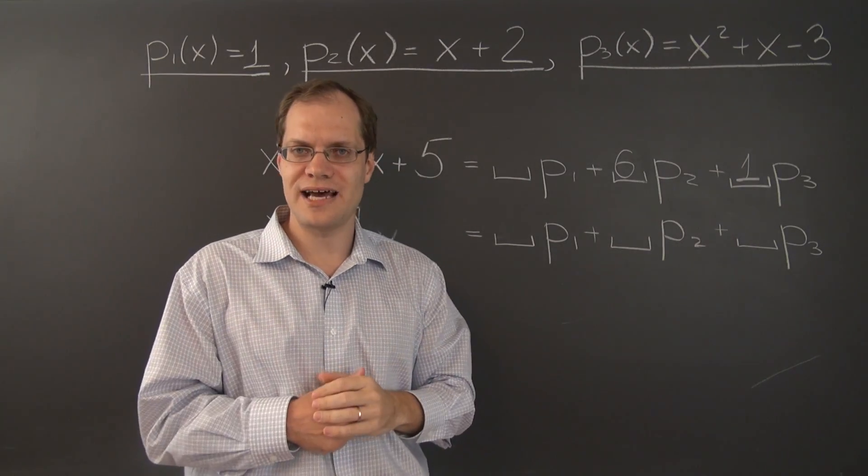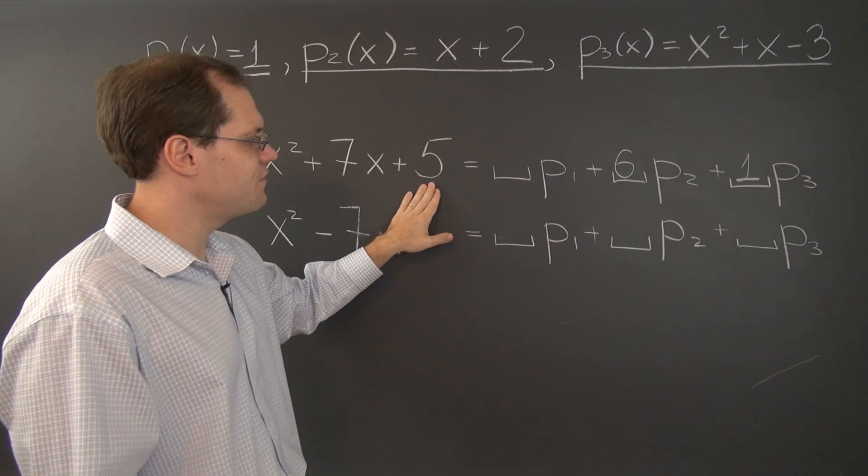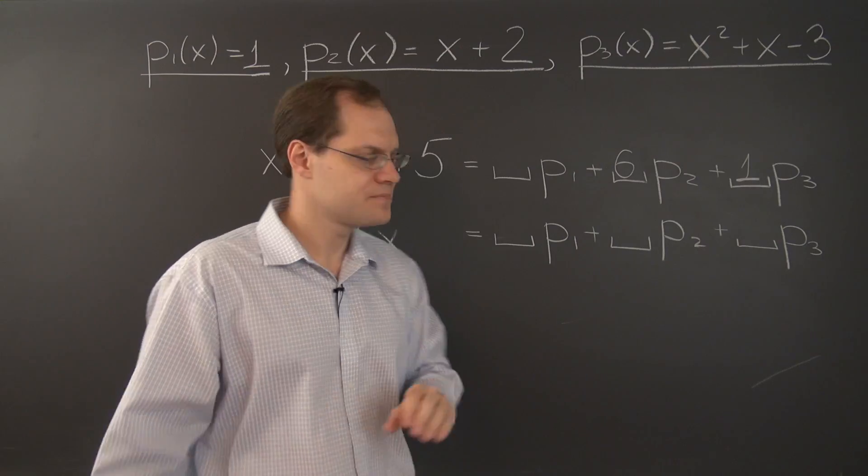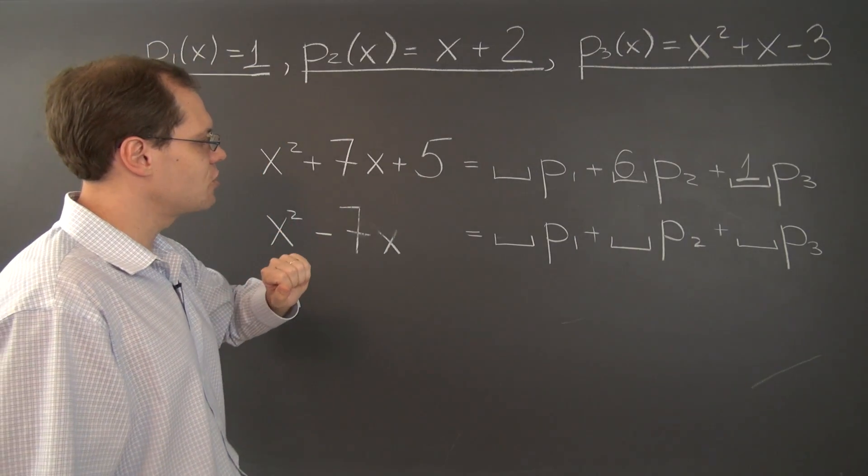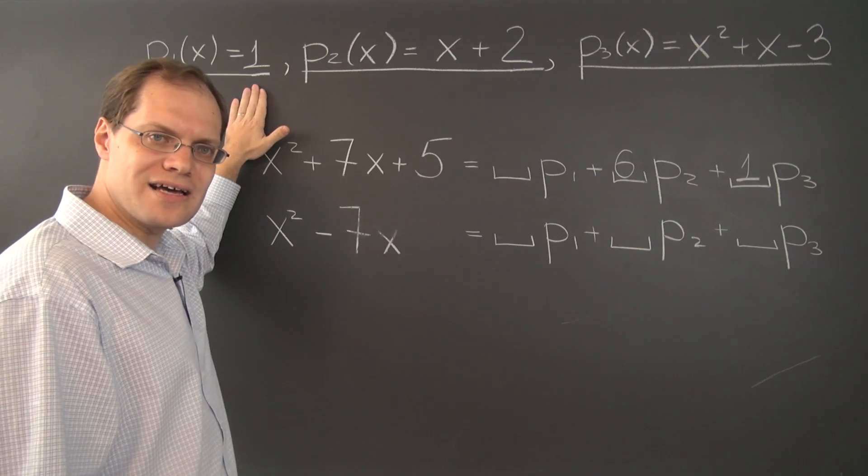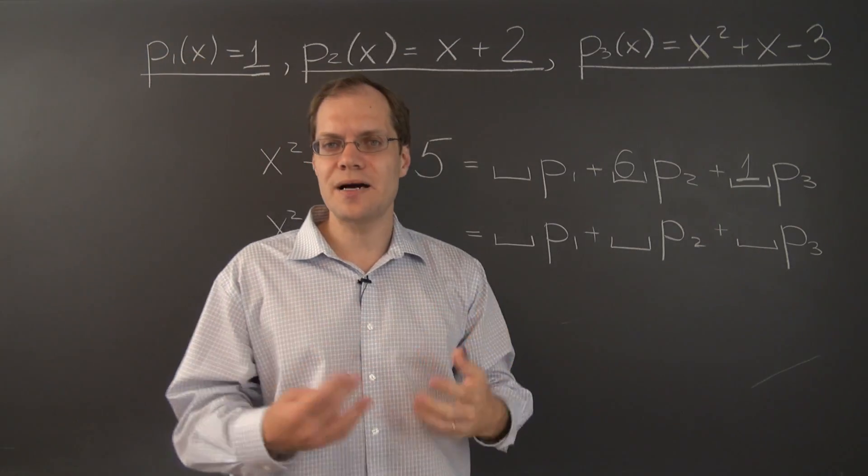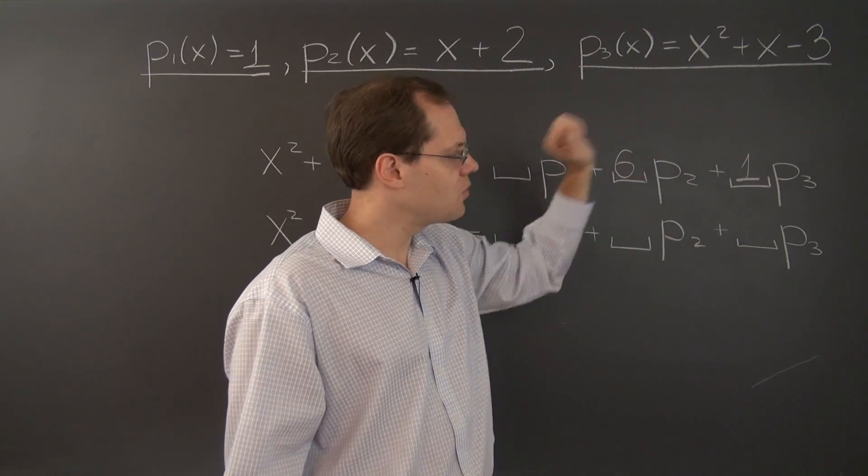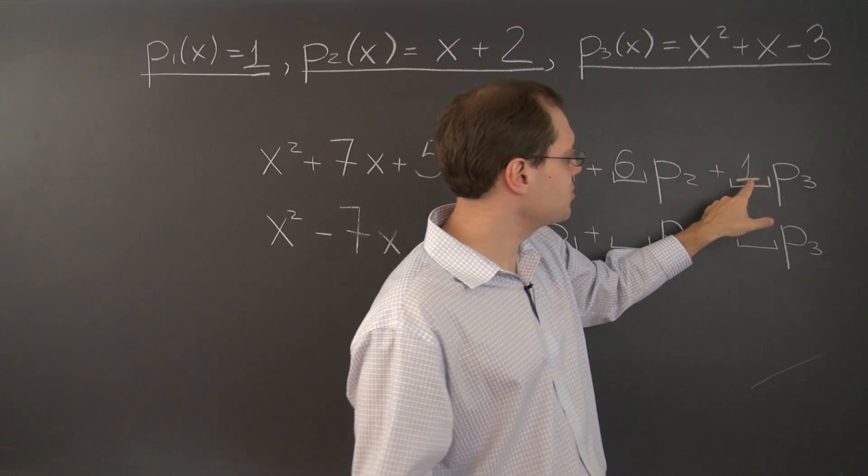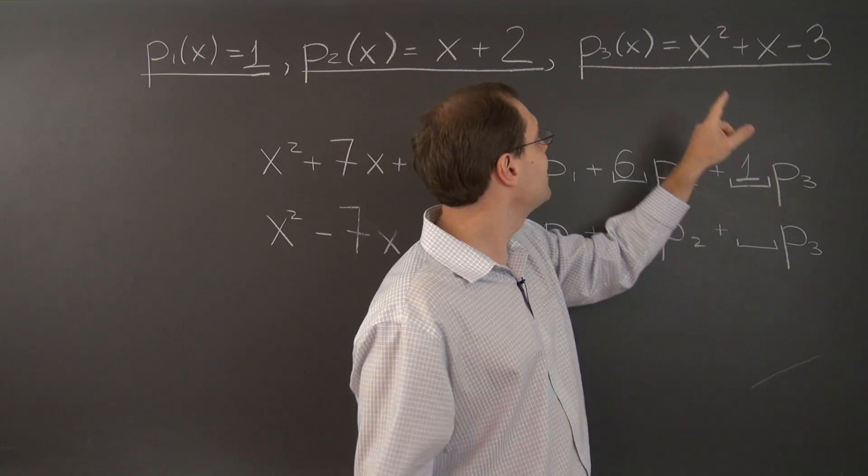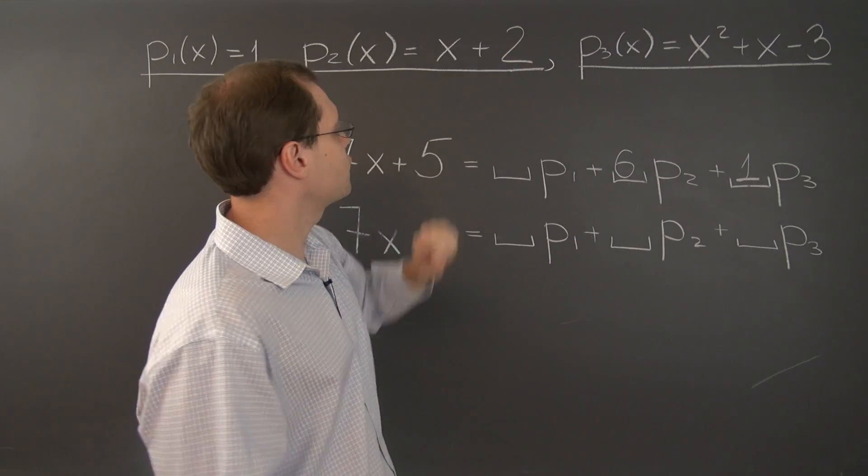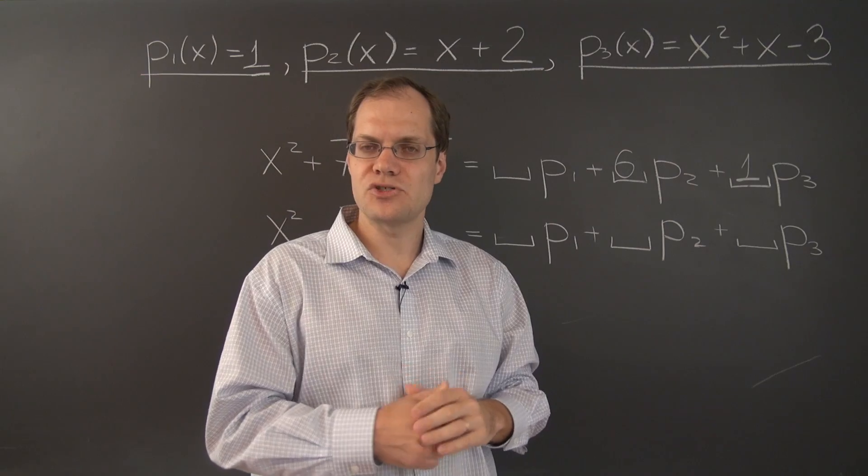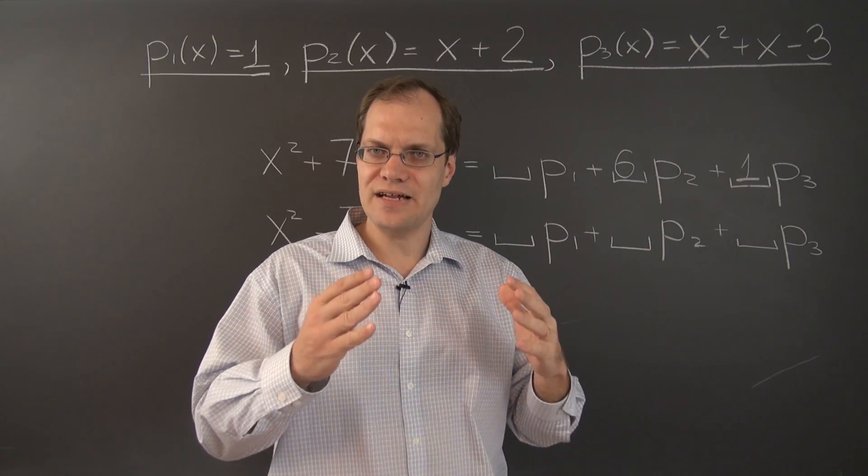And the only remaining part of the task is to take care of the 5. So let's see how much of P1 we need to take to match this term. So the answer is not 5, because we already have some contribution towards this term from P2 and P3. What are those contributions? Well, it's minus 3 from P3 and actually 12 from P2. So we have 12 minus 3, 9. So we already have 9 in that free term.